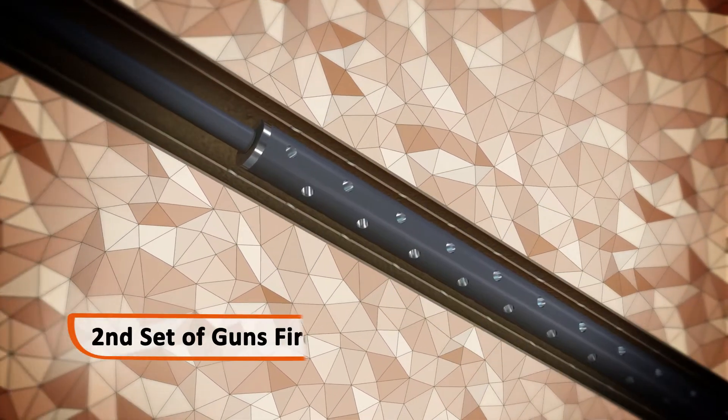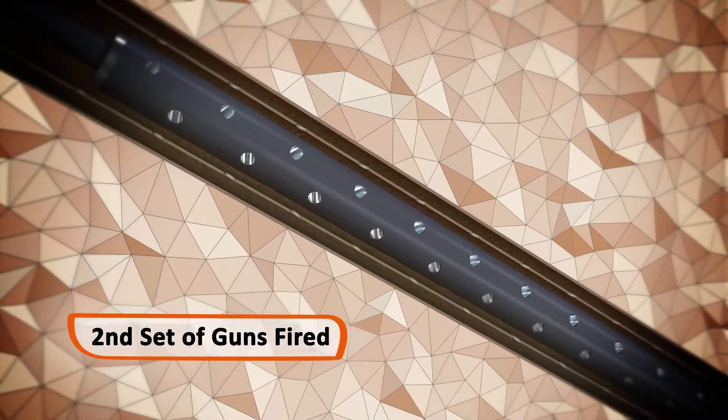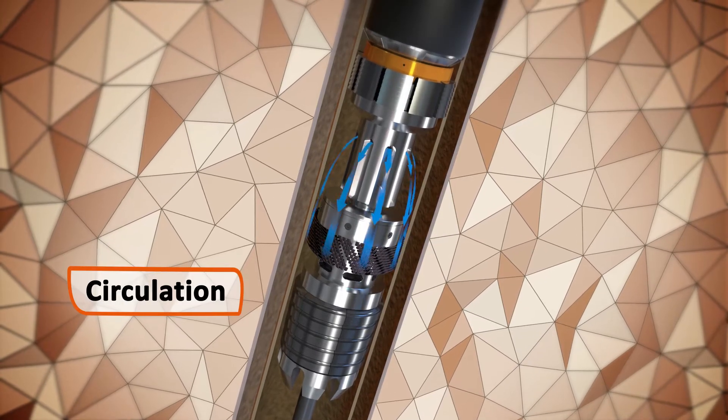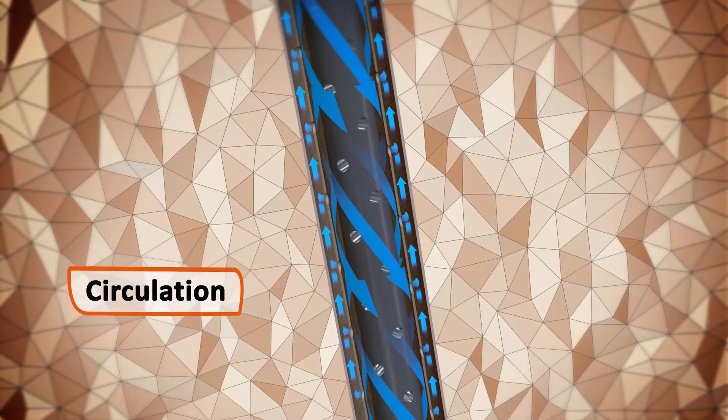Pressuring up underneath the CX SV allows for the second set of guns to be fired and circulation between the two sets of perforations to be established.